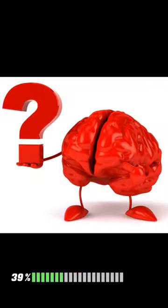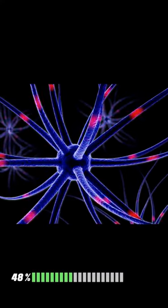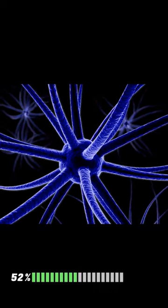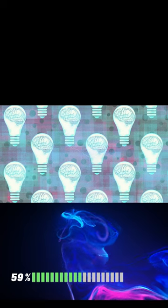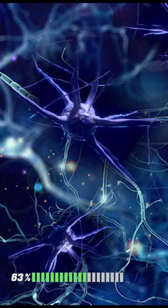But how does the brain generate electricity, and what does it use it for? Well, the brain generates electricity through the activity of neurons, which are specialized cells that transmit and receive electrical and chemical signals. This electricity is used to power the various functions of the brain, including thoughts, movements, and sensory experiences.